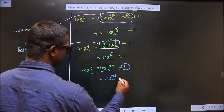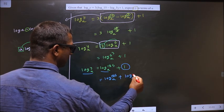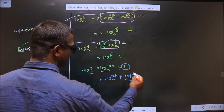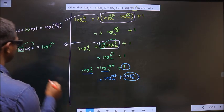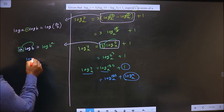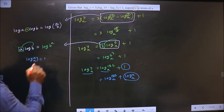If I place here also a, these two are same, so the result is 1. Log a base a is, whenever these two are same, the result is 1.